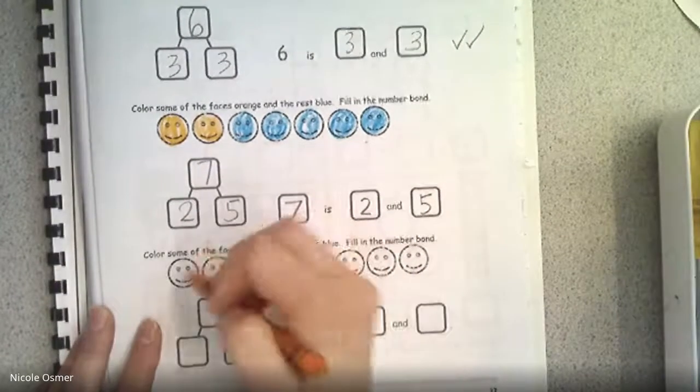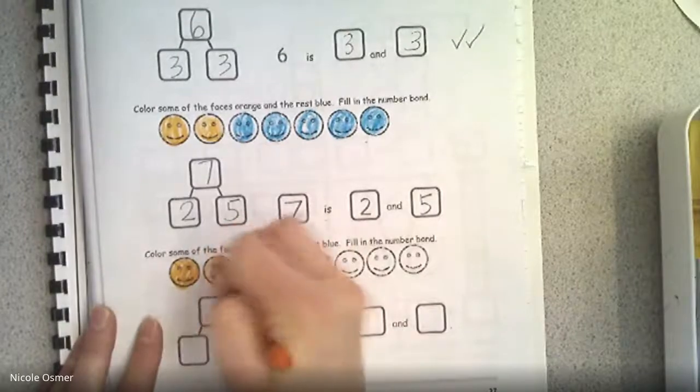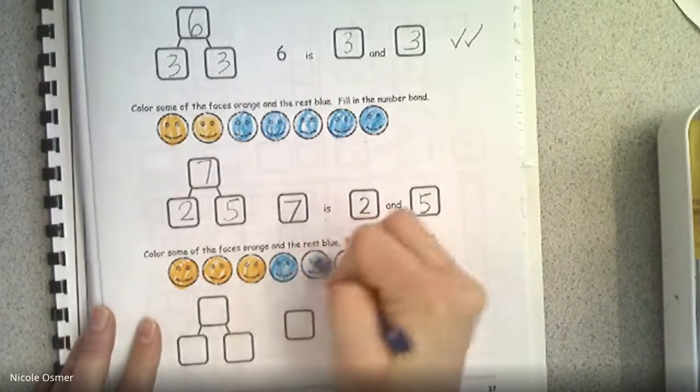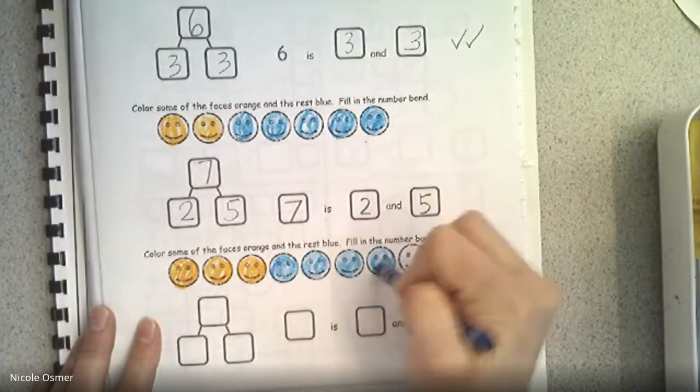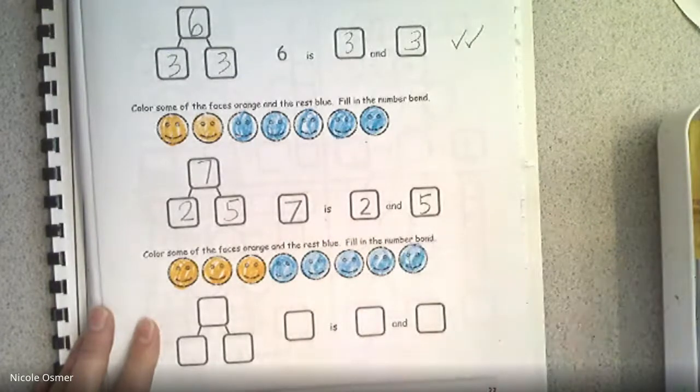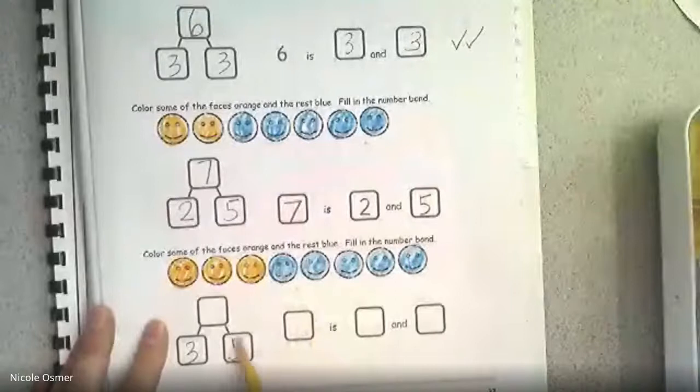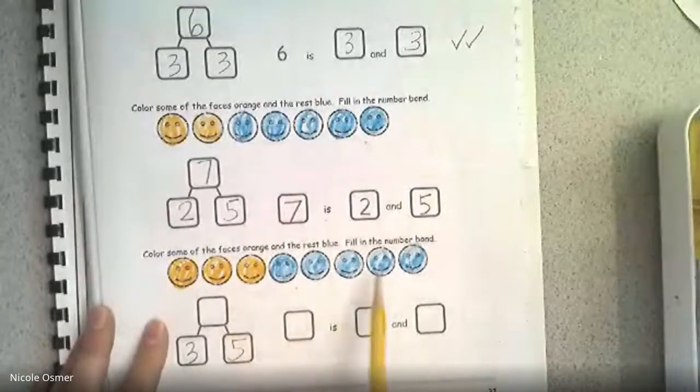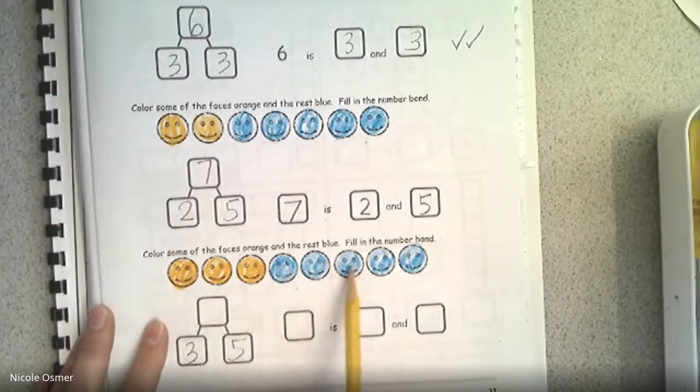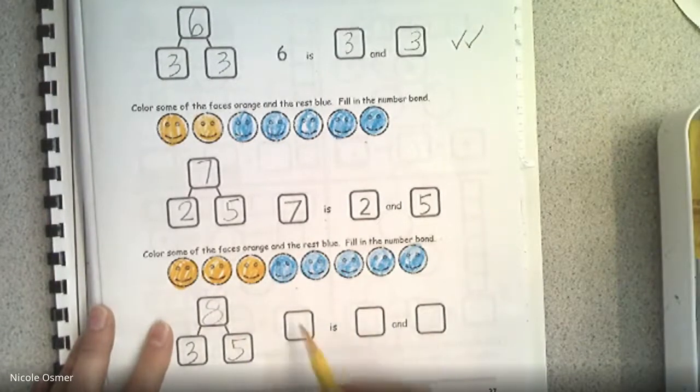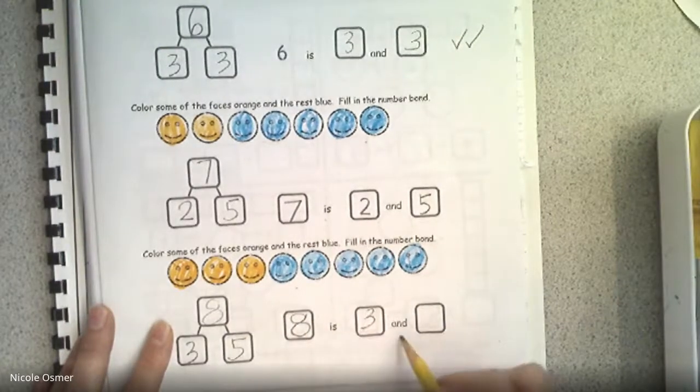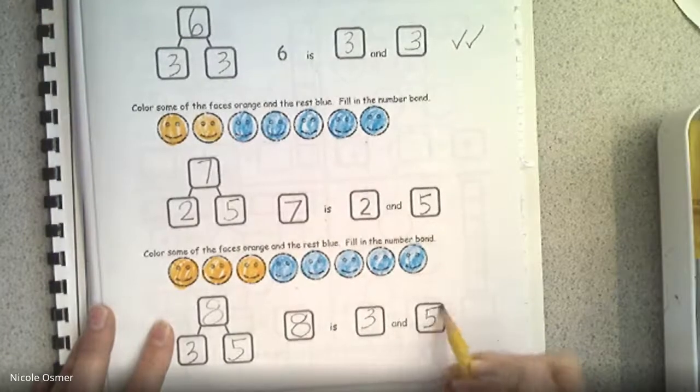All right, let's do it again. Orange faces and blue. Okay, three. How many blue? Five for me. Three and five equals, three, four, five, six, seven, eight. I counted on, I got to eight. So that means eight is my answer. That goes here. Eight is three and five. We did it.